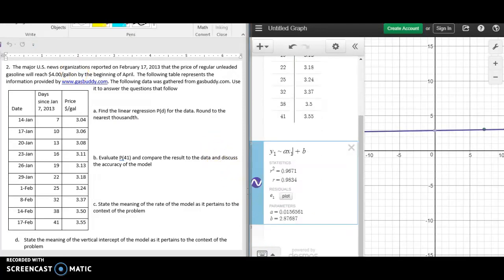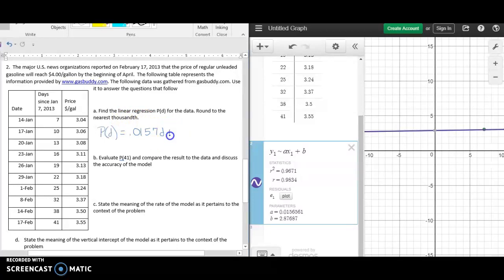We see here that a is our slope and b is our vertical intercept, and so we are going to write the linear regression. The price is a function of the day since January 7th, p of d is equal to 0.0157d plus 2.877, rounding to the thousandth.